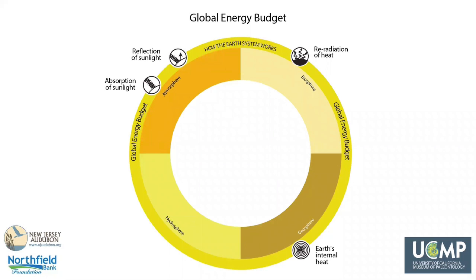To understand how the Earth works, we first need to know about the sources of energy for processes in the atmosphere, hydrosphere, geosphere, and biosphere. For understanding global change, the most important components of the Earth's energy budget are how much sunlight is absorbed and reflected, and how much heat is re-radiated back into space. These primarily affect the atmosphere, hydrosphere, and biosphere. Additionally, Earth's internal heat drives processes in the geosphere, but contributes very little energy to Earth's climate and most ecosystems.